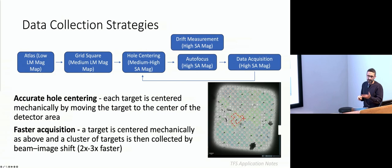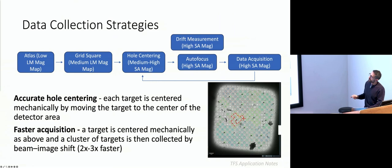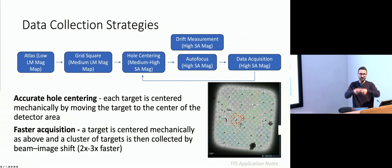Once positions are selected, we ramp up the magnification. The automated software will center each position, perform autofocus, and then collect the data. This loop runs for as many positions as we have selected. This way of collecting data is called accurate hole centering — for each position, the microscope moves the hole to the center of the detector, performs autofocus, and acquires data.